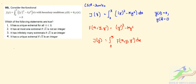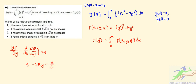The Euler-Lagrange equation gives ∂f/∂y − d/dx(∂f/∂y′) = 0. In our case this becomes −2ky − d/dx(2y′) = 0, which we can rewrite as y″ + ky = 0.